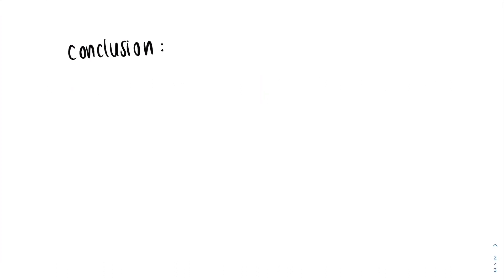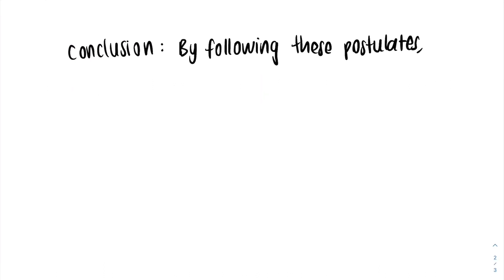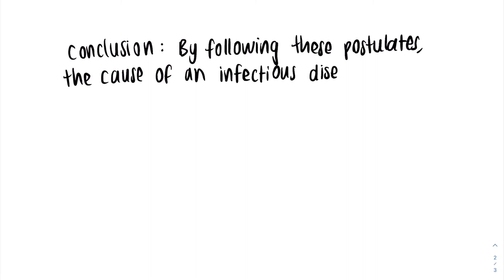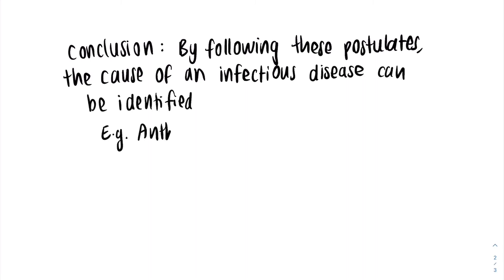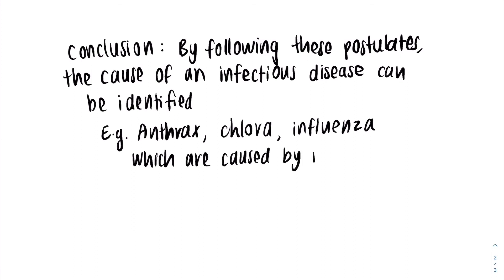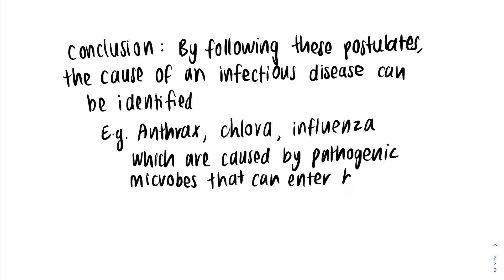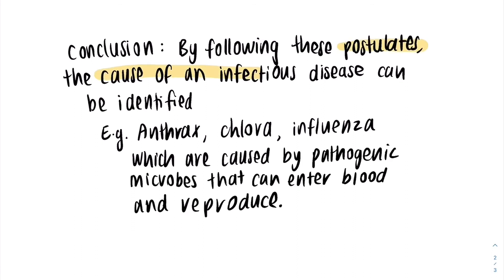Hence, by following these postulates, the cause of an infectious disease can be identified. For example, anthrax, cholera, and influenza, which are caused by pathogenic microbes that can enter blood and reproduce and cause disease.